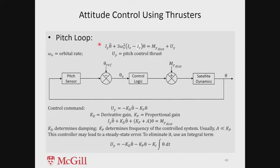This is the pitch loop: θ is the pitch angle, which you measure using a sensor. You give a θ_reference — normally equal to zero because you want the pitch angle to be zero — and only when reorienting will θ_reference be non-zero. The error θ − θ_reference goes into some control logic, along with disturbances.